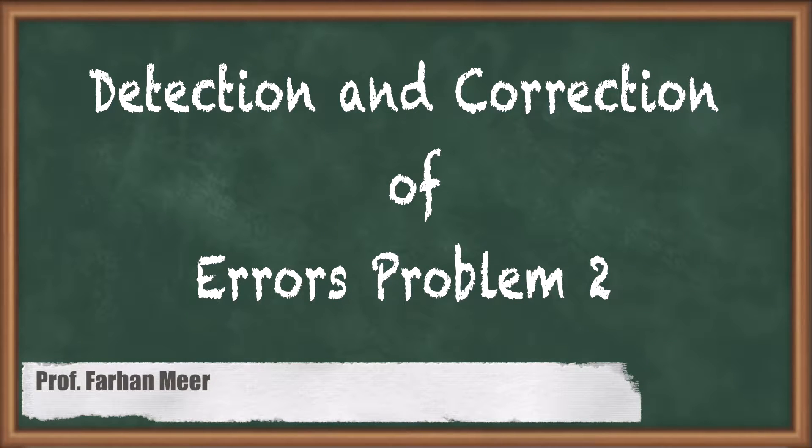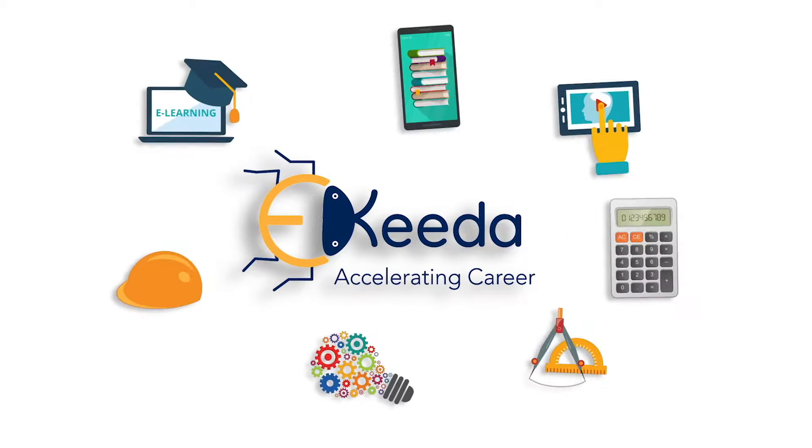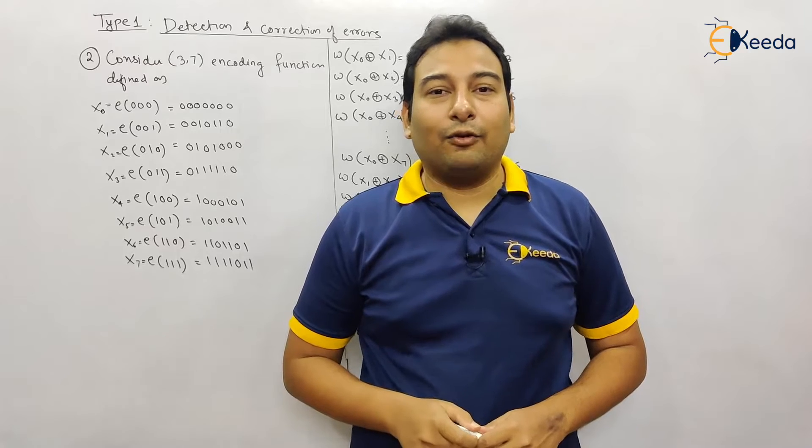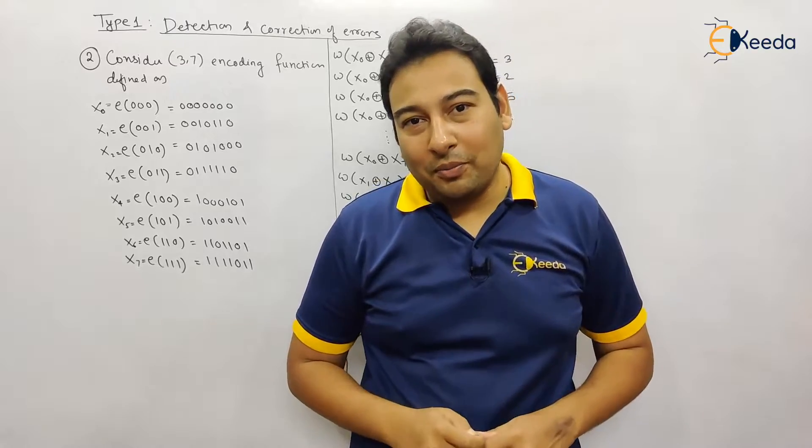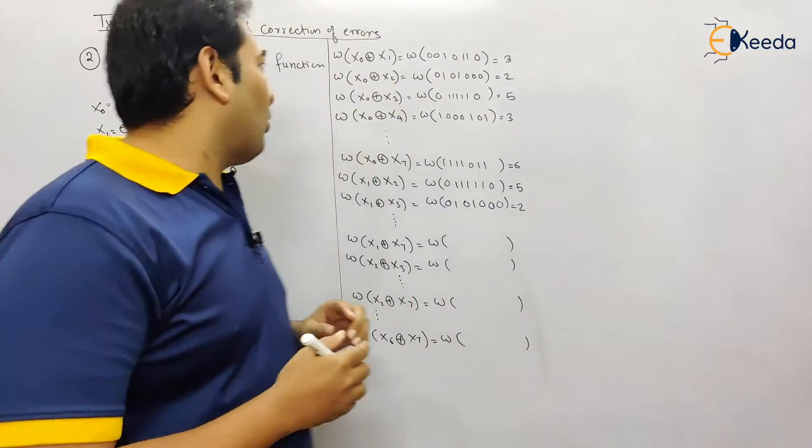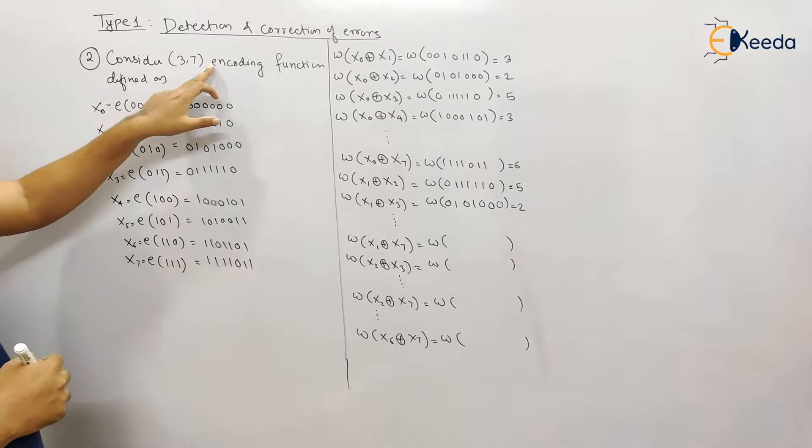Hello friends, in this video we'll be discussing type number one detection and correction of errors, problem number two. Let us discuss problem number two, similar to problem number one. Here the problem is 3 comma 7 encoding function, that means B cube to B raise to 7.